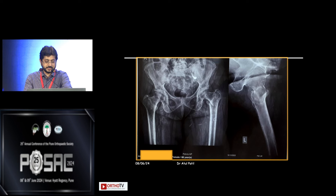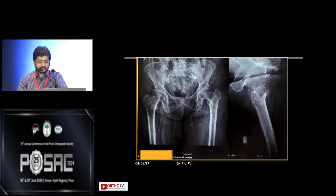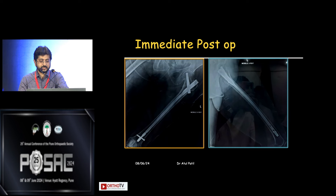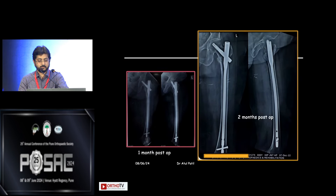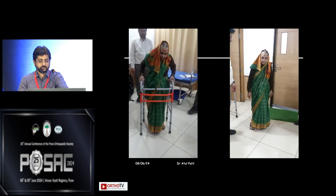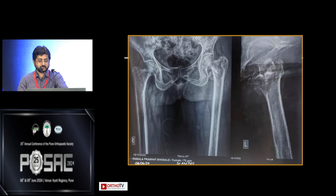Another patient with an intertrochanteric fracture in varus at the fracture site, with hypertensive heart disease and dementia. Fixed percutaneously with a long PFNA2. At two months post-op, the fracture is completely healed and the patient started walking normally.